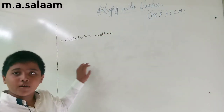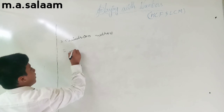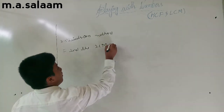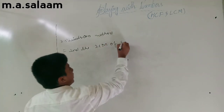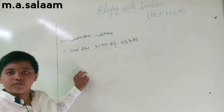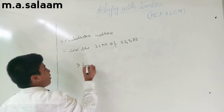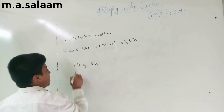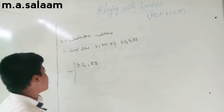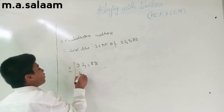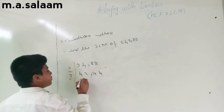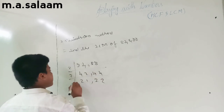If your question is: find the LCM of 84 and 88, then write 84 and 88, draw a line, and find the first number that can divide both 84 and 88. That is 2. Divide repeatedly by 2: 84 becomes 42, then 21; 88 becomes 44, then 22, then 11.